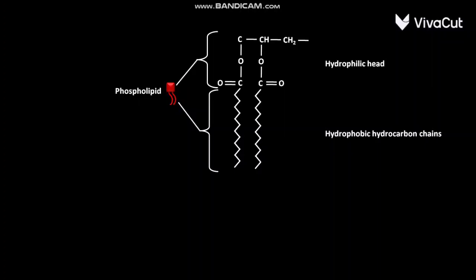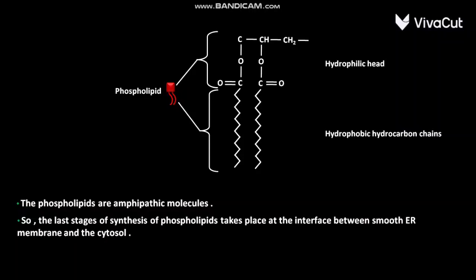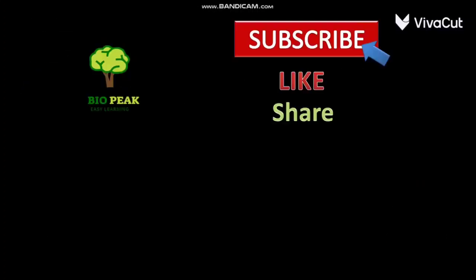These long hydrocarbon chains anchor the phospholipid to the smooth ER membrane. The phospholipids are amphipathic molecules. The last stages of synthesis of phospholipids take place at the interface between smooth ER membrane and the cytosol.